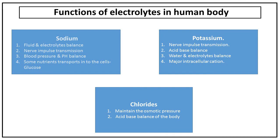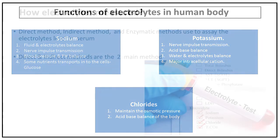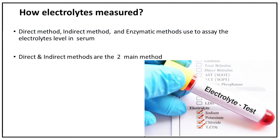The methods used to measure electrolytes in the laboratory include the direct method, indirect method, and enzymatic method. Direct and indirect ion-selective electrode methods are the two main methods used to assay electrolyte levels in body fluids.